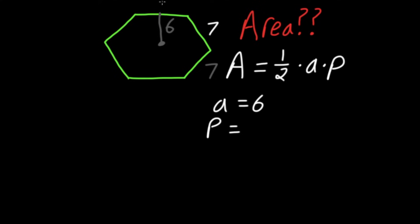That means this side is seven, as well as this side, this side, this side, and this side. Seven times all of its sides will give you your perimeter. Seven times six, which is 42. So P is 42.